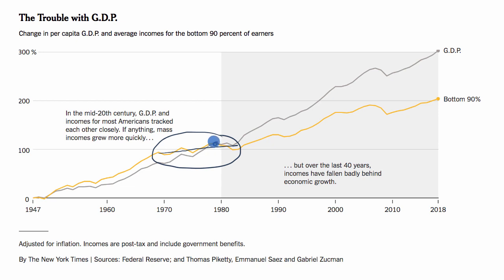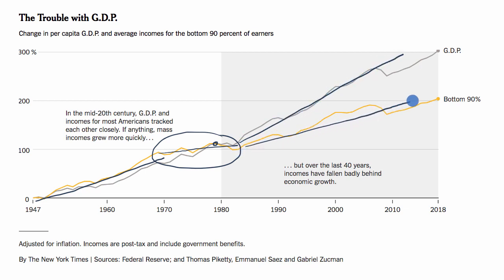One of the questions we ask ourselves is why do we see this trend? In the earlier period they're both growing at around the same rate, but then per capita GDP seems to be consistently growing at a higher rate than the after-tax income of the bottom 90%. One of the levers we theorize is maybe it has something to do with tax policy, and that's what we're going to focus on in this video.